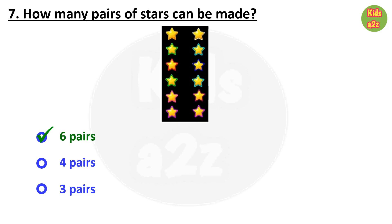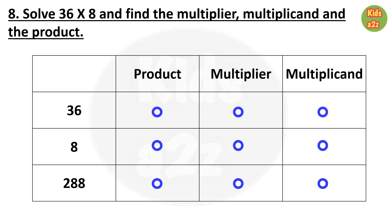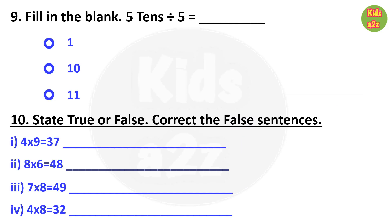Question 8: Solve 36 multiplied by 8 and find the multiplier, multiplicand, and the product. 36 multiplied by 8 means 36 is the multiplicand, 8 is the multiplier, and 288 is the product.